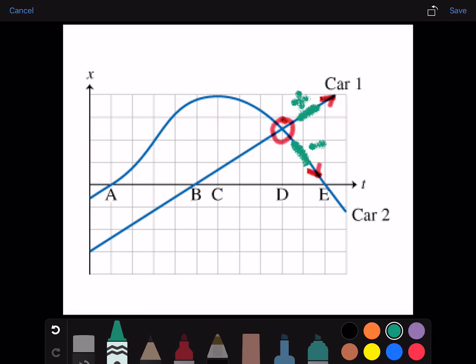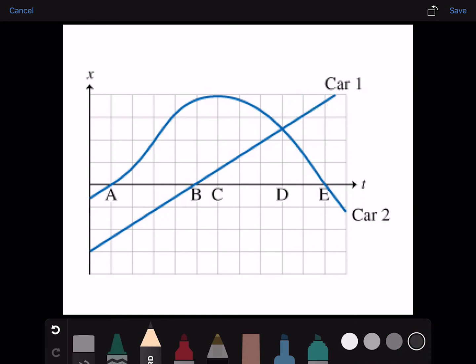At which of the letter times, if any, does car 1 momentarily stop? Car 1 does not stop because the slope of the tangent line at any point on this line is never zero. It's always increasing.